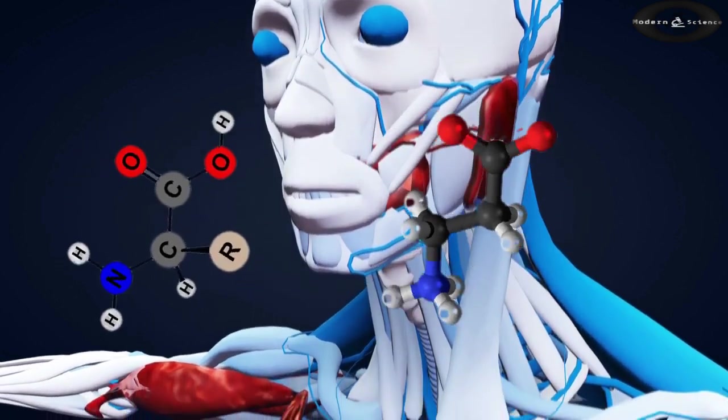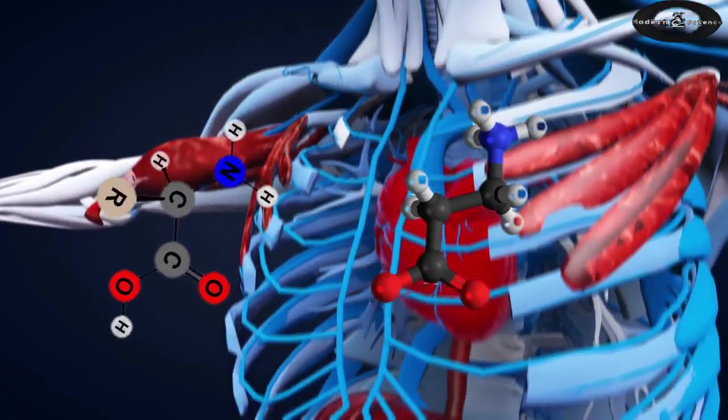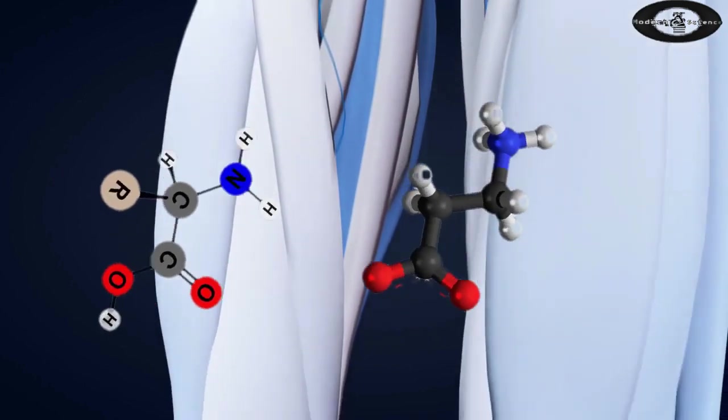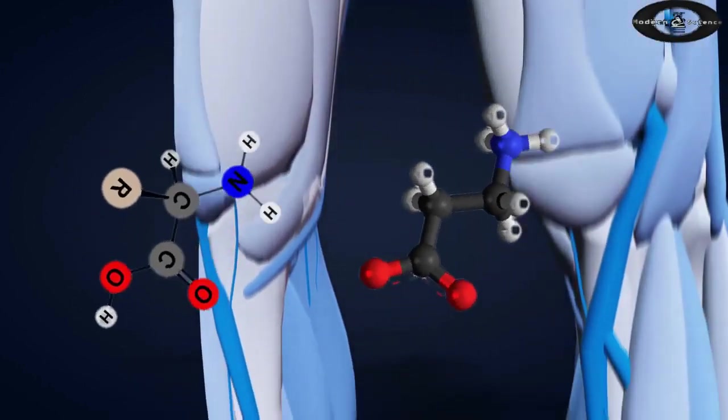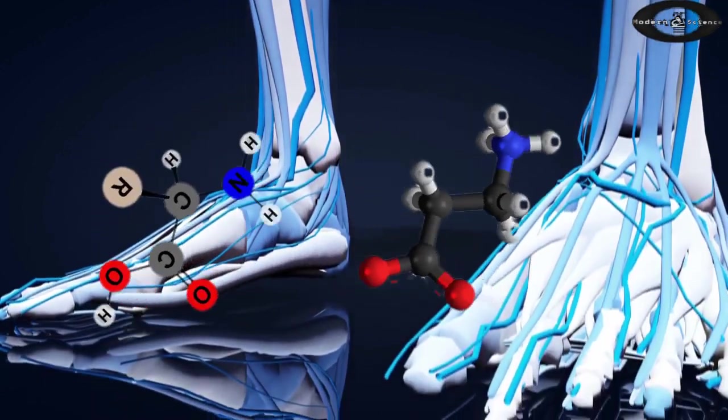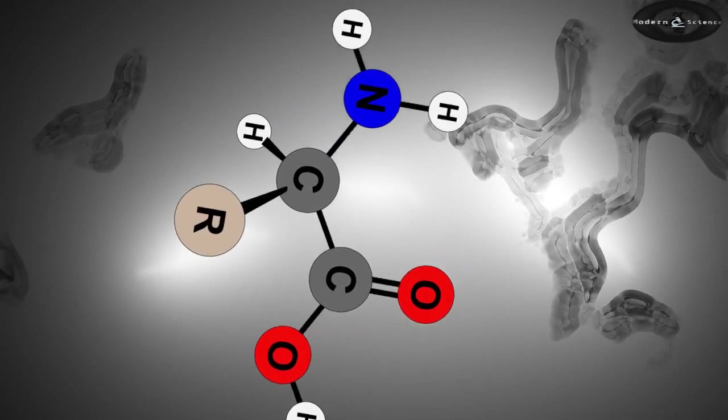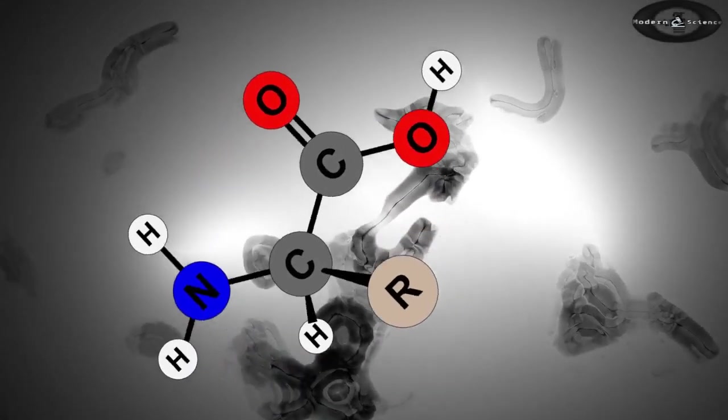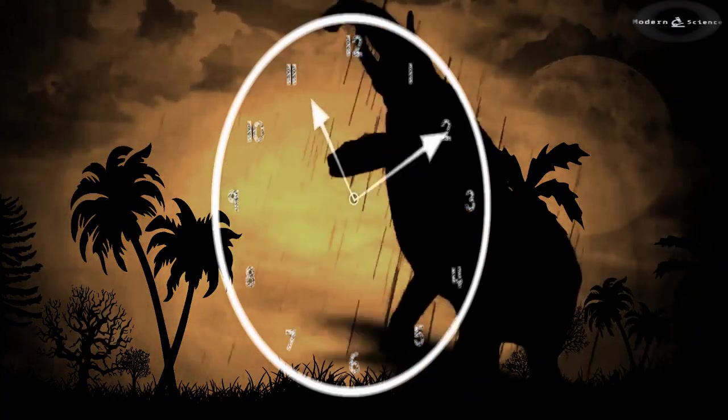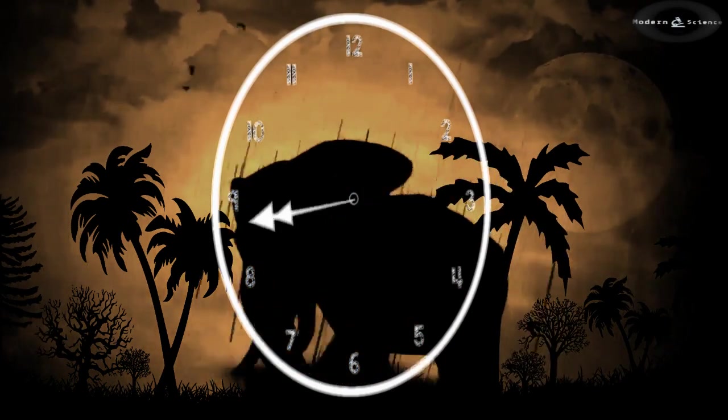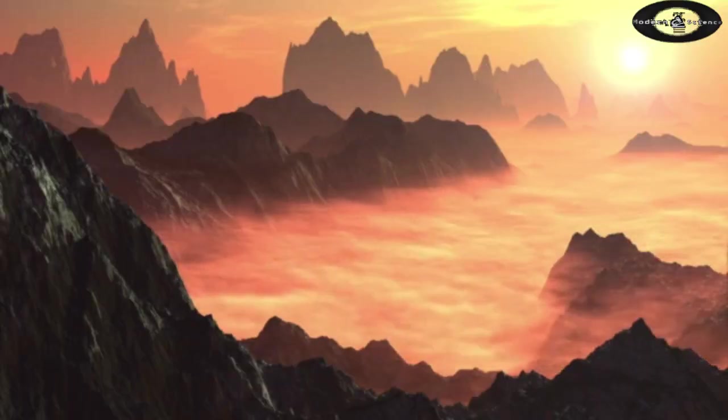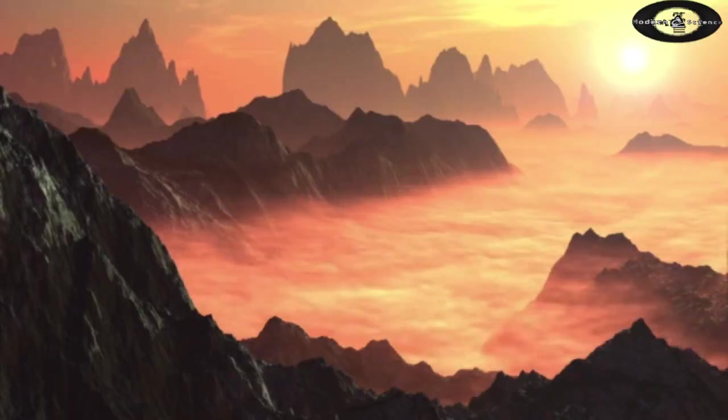Amino acids are often described as the building blocks of life. They are used to form the proteins that control most biochemical processes in our bodies. Miller had made two of life's most important components from scratch. But did Miller's experiment reveal the real truth behind the origin of life? Probably not, because the early Earth's atmosphere had a different mixture of gases.